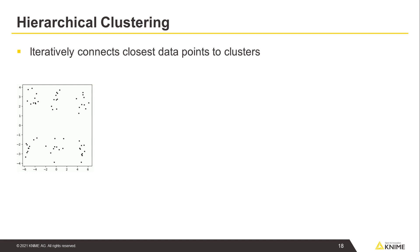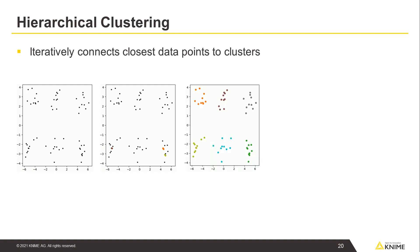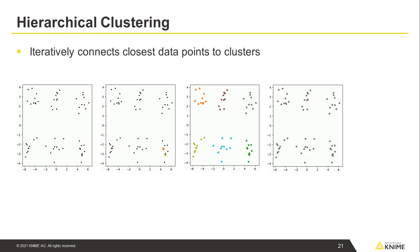Hierarchical clustering algorithm works by iteratively connecting the closest data points to form clusters. Initially, all data points are disconnected from each other — each data point is treated as its own cluster. Then the two closest data points are connected, forming a cluster. Next, the two next closest data points or clusters are connected to form a larger cluster, and so on. The process is repeated to form progressively larger clusters and continues until all data points are connected into a single cluster.